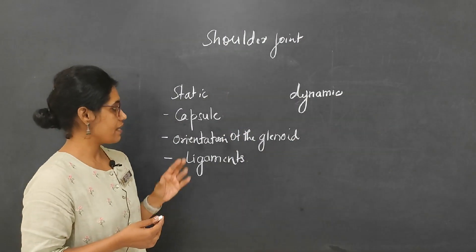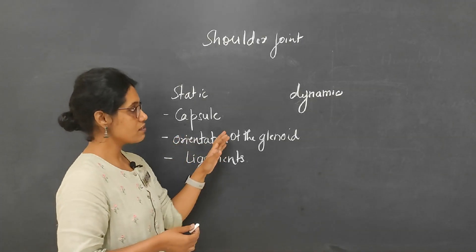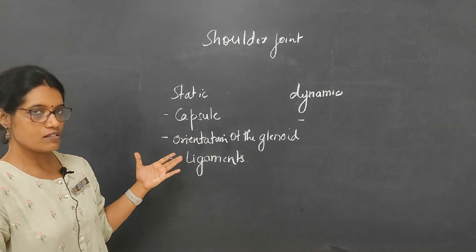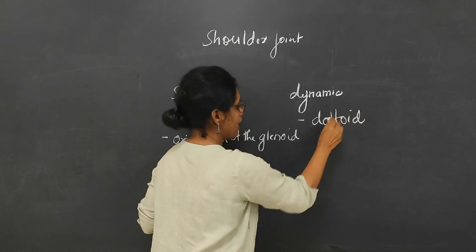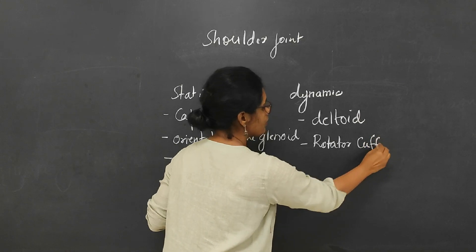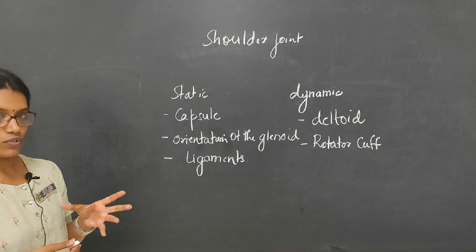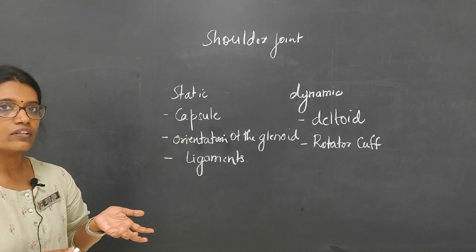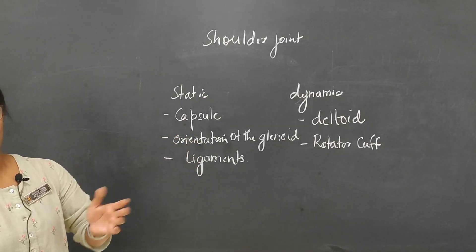In a previous video, we looked at static factors for glenohumeral stability. Now we are going to look at dynamic factors. Dynamic factors are the muscles that contribute to glenohumeral stability. The major muscles at the shoulder — the prime mover is the deltoid, and then we have the rotator cuff. These two muscles are primarily responsible for movements at the shoulder joint. We are going to explore further how this group of muscles adds to dynamic stability at the shoulder.